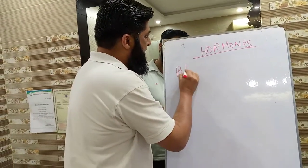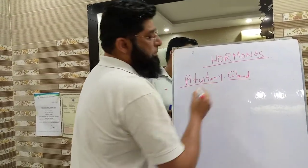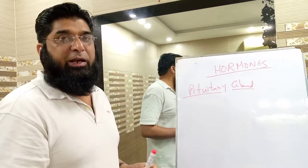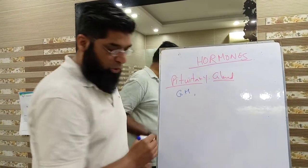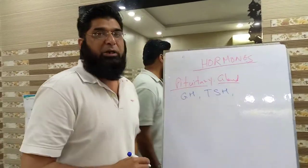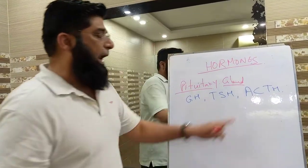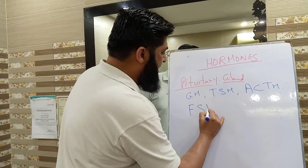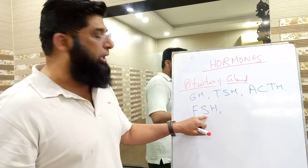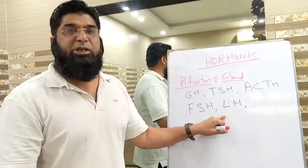Number 1: Pituitary gland. The pituitary gland secretes the following important hormones. Number 1: Growth Hormone. Number 2: Thyroid Stimulating Hormone (TSH). Number 3: ACTH — Adrenocorticotrophic Hormone. Number 4: FSH — Follicle Stimulating Hormone. Number 5: LH — Luteinizing Hormone.